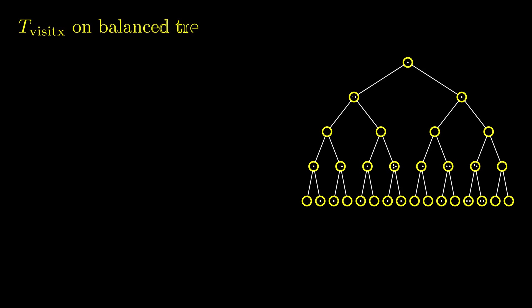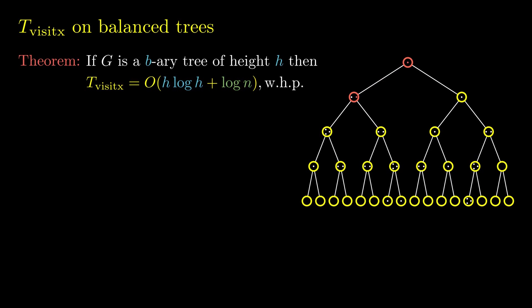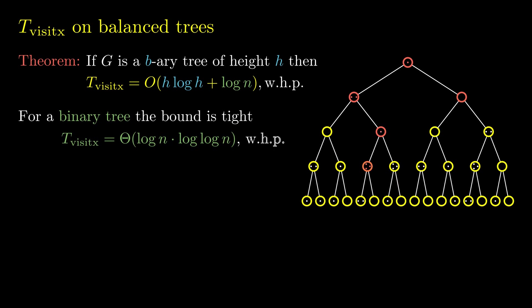Next, we discuss the visit exchange process on balanced trees. For any b-ary tree, the broadcast time is at most h log h plus log n, where h is the height of the tree. Here b does not have to be constant, and the bound works up to b equals n, which corresponds to the star graph. For a binary tree, when b equals 2, the bound is log n times log log n. We show this bound is tight by arguing that there is a subtree of height log log n that never receives an agent — this is a lower bound on the cover time of n parallel random walks in a binary tree starting from stationarity.